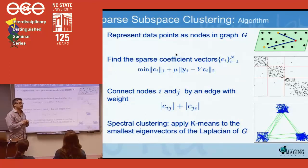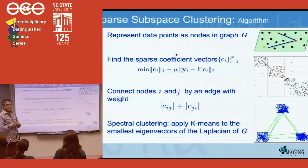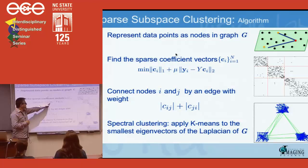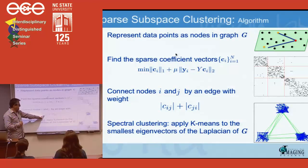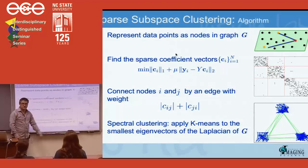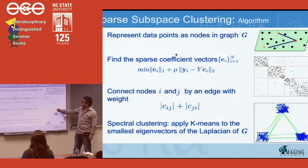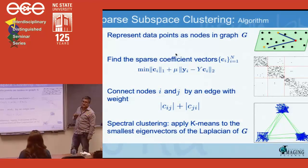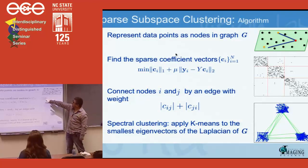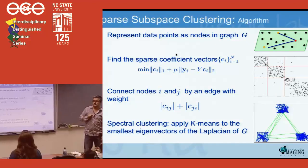To summarize the method: take the cloud of points, build a graph where nodes are data points, and connect pairs of points using the sparse coefficients. For every data point, write it as a linear combination of all the others and find the sparse solution. The coefficient C_{ij} — when expressing point i as a linear combination of all others — gives the weight connecting i and j. Since C_{ij} need not equal C_{ji}, we symmetrize. White means zero similarity and black means high similarity. Typically there are only d non-zero coefficients per row, matching the dimension of the subspace — here four, since the data lives in four-dimensional subspaces.